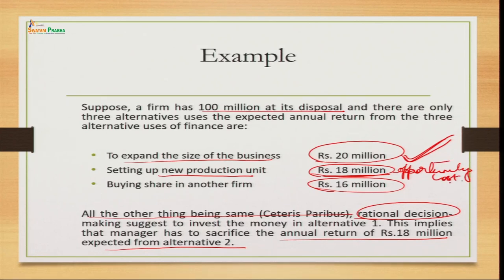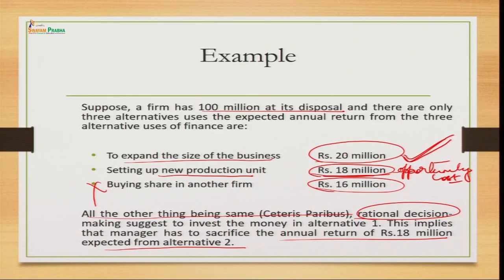We have chosen the best alternative and are not concerned with the third one. We are comparing only the best and second-best. We have already chosen the first/best alternative, so this second-best becomes our opportunity cost — it is the expected income we could have earned from that alternative but have now foregone by sacrificing it.